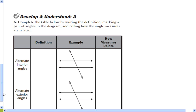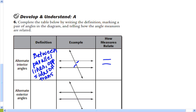Alternate interior angles. Let's start by marking those. That would look like that. Those two are alternate interior angles. And we will say they are between parallel lines and on the opposite sides of the transversal. And those are equal in measure.